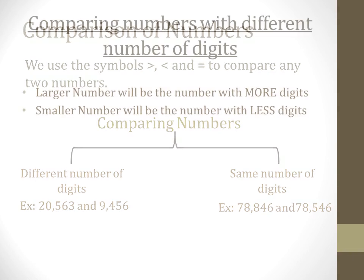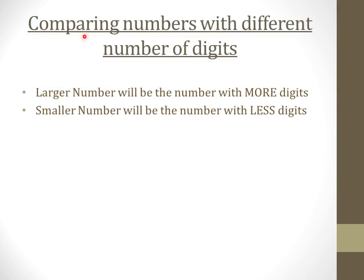Now we will understand these two cases one by one — how to solve them. The first case is comparing numbers with different number of digits. Under this case the answer is very easy. You just have to look at the number of digits of the given numbers. The larger number will be the number with more digits, and the smaller number will be the number with fewer digits.